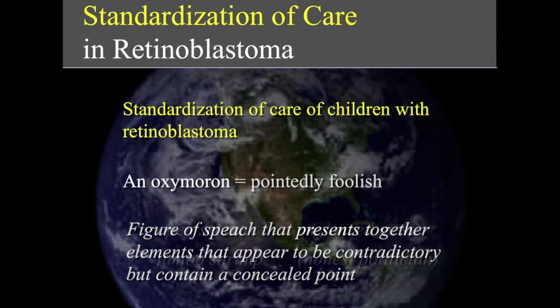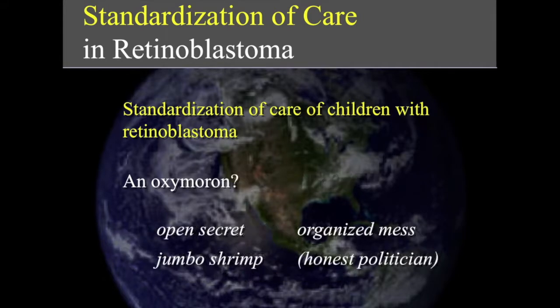In practice, 'open secret' is an oxymoron because something can't be open data and a secret at the same time. Or 'organized mess' that many of us have on our desk, or 'jungle shrimp' that you can buy, and 'honest politician.' These are in brackets because different people would think different ways about it, but unquestionably the first part and the latter part are fighting with each other.